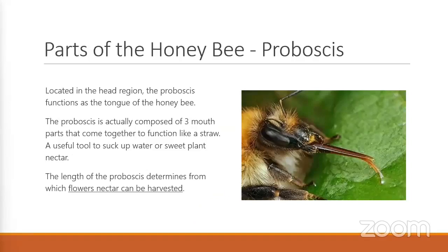Let's discuss their tongue, or the proboscis. Some of the bees — you'll really see it; I caught some with their tongue out. If you look very closely, you can see their straw-like tongue at the very tip of their mouth. There are three mouth parts that come together to function like a straw that will suck up water or nectar from plants and bring it back. The length of their tongue will determine which flowers they can collect nectar from — if their mouth is too short, certain flowers are completely off-limits. The longer the tongue, the more flowers they can range.